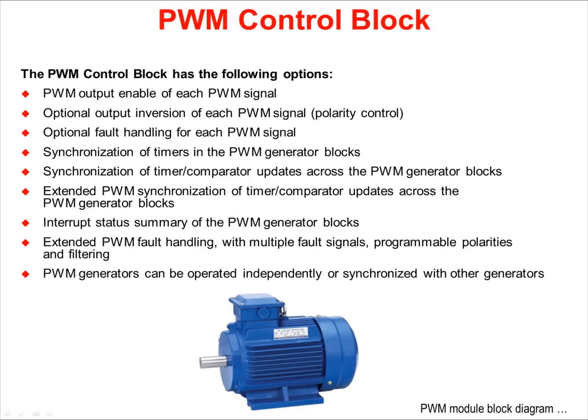The PWM control block has the following options: PWM output enable of each signal with optional output inversion, optional fault handling for each signal, synchronization of the timers across the generator blocks, and synchronization of the timer and comparator updates across the blocks. The PWM control block generates an interrupt status summary across the blocks, and has extended fault handling with multiple fault signals.